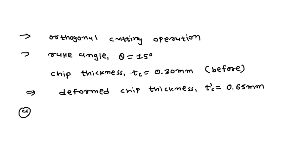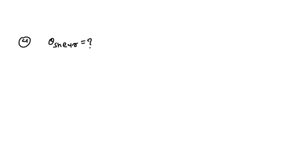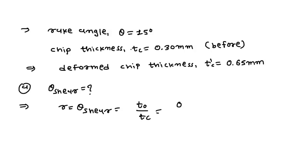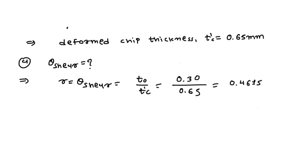In the first part of this question, we need to find the shear plane angle. To find the chip thickness ratio r, we write r equal to t0 divided by tc prime, which is 0.30 divided by 0.65, and we get r equal to 0.4615.